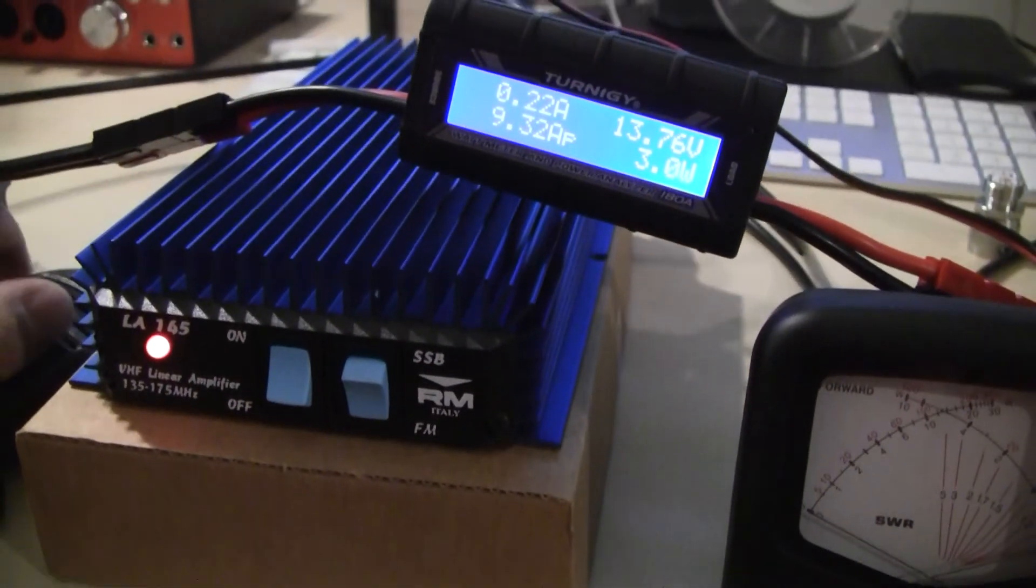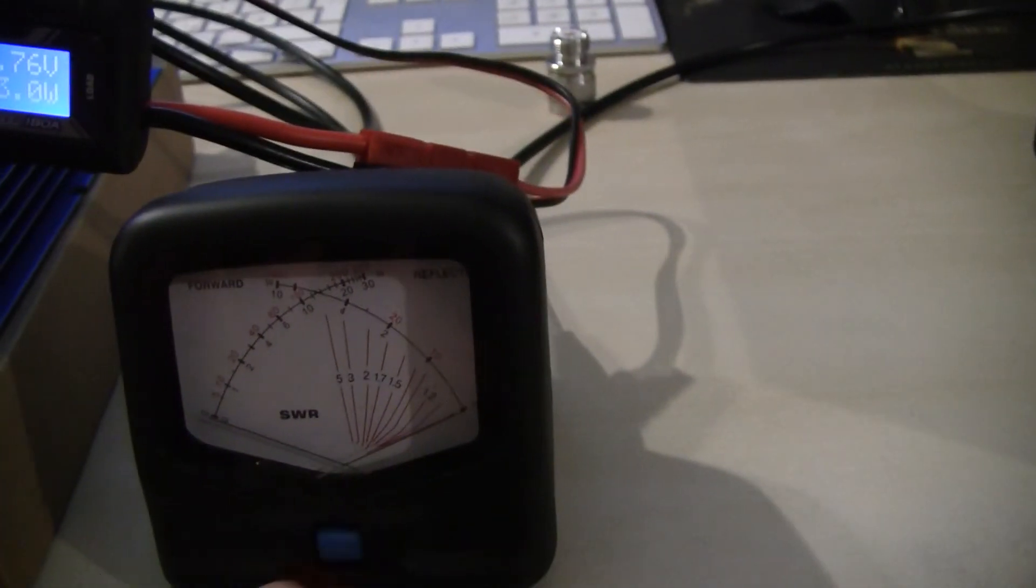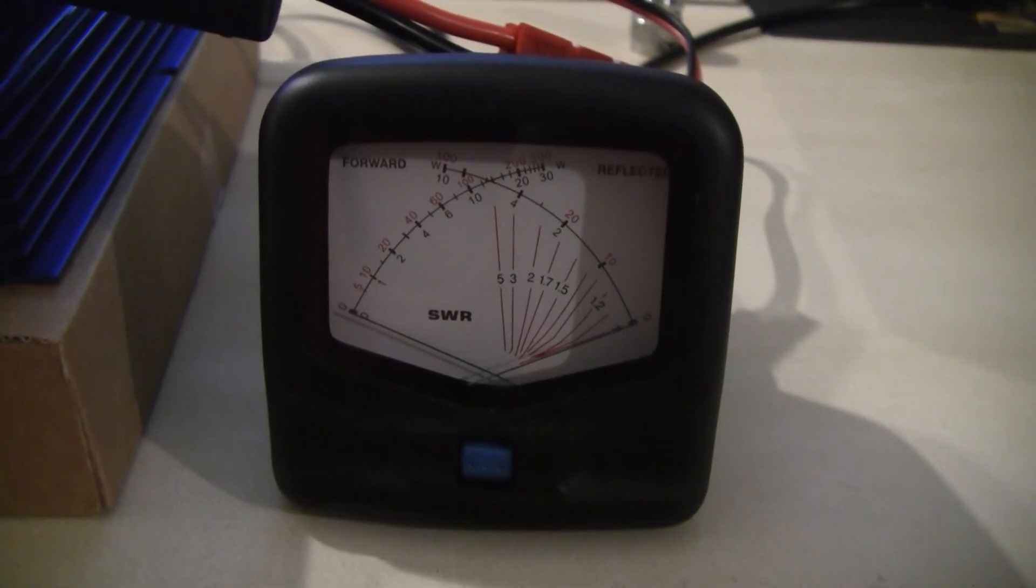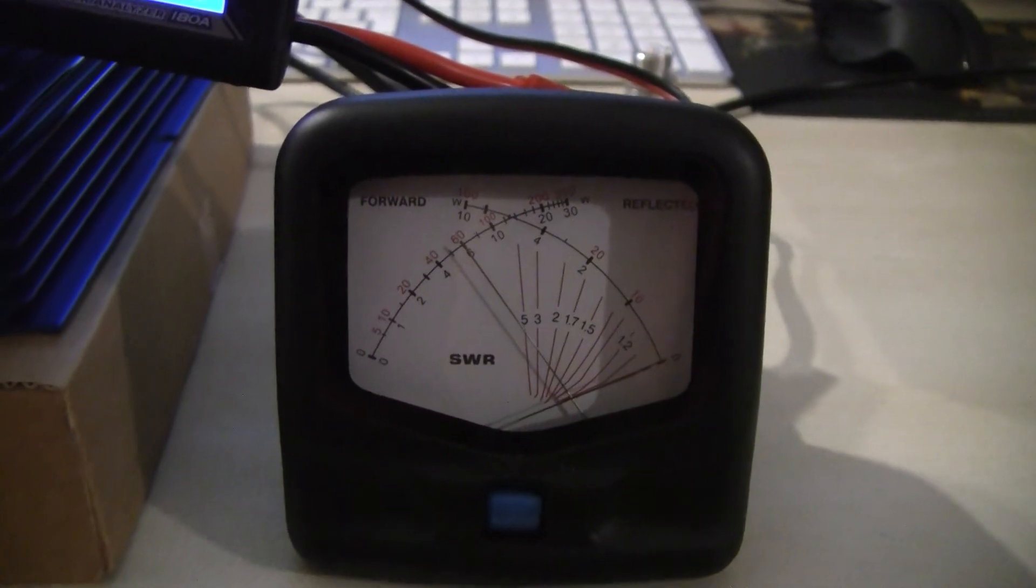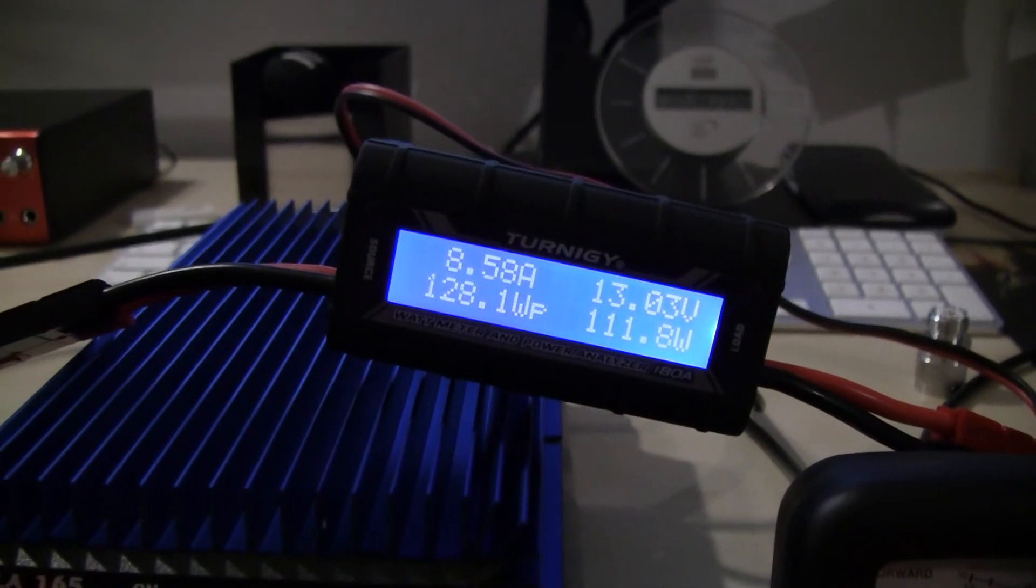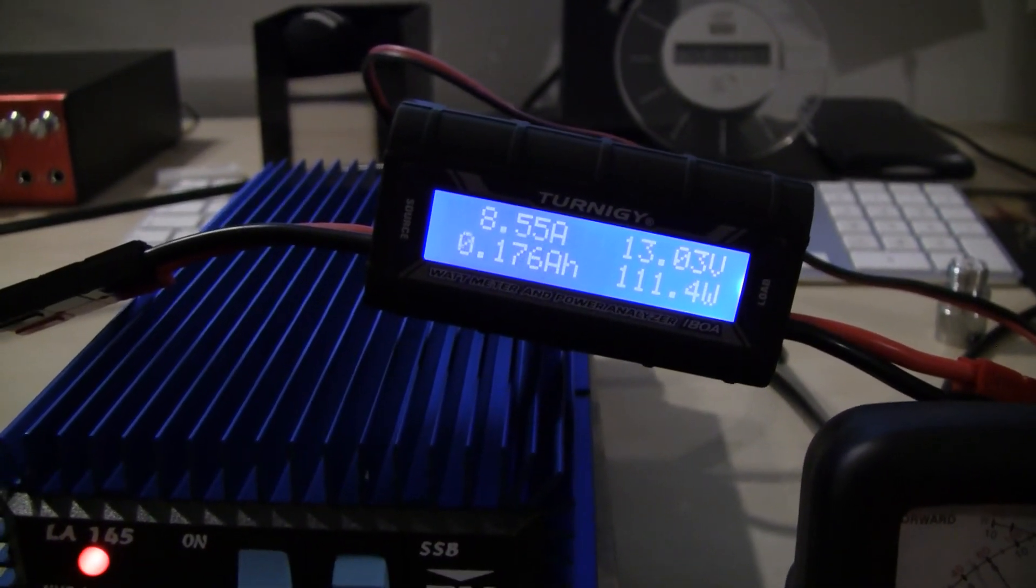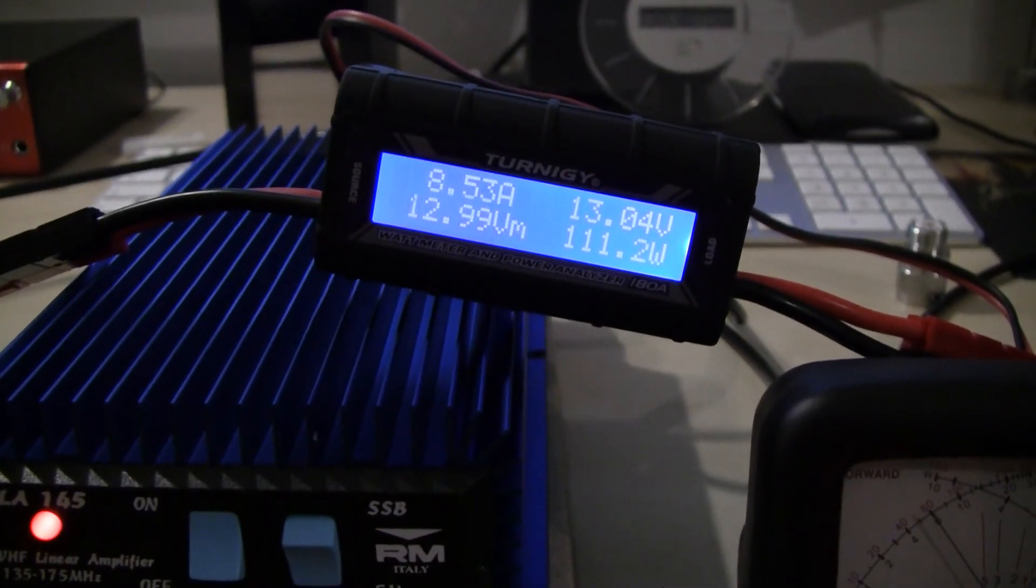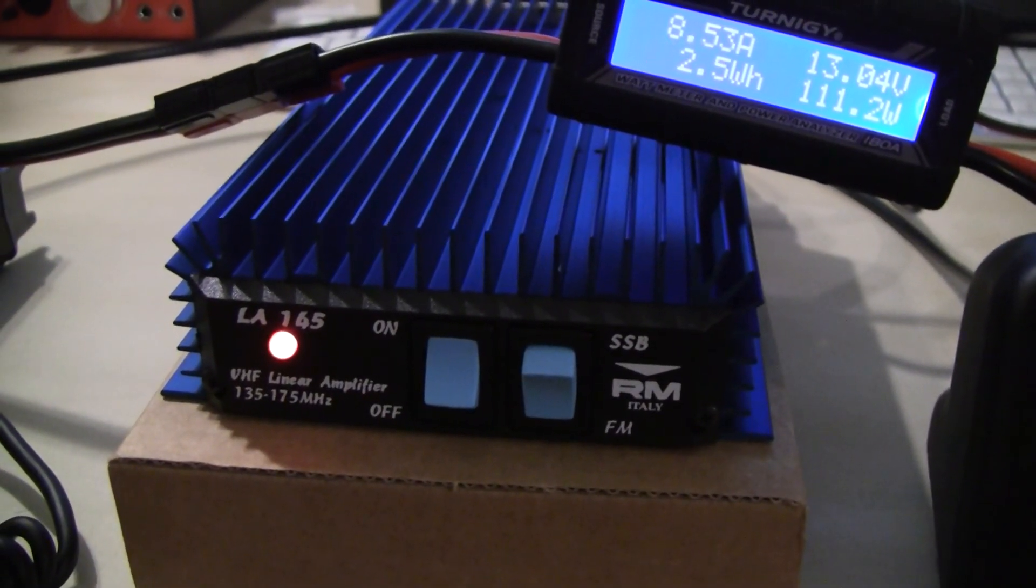Okay, the amplifier is now on, same again. So switching to the high power setting and so we have about 60 watts with 1.5 watts of input, drawing about 8.5 to 8.6 amps roughly. And yeah, that is the LA145 linear amplifier.